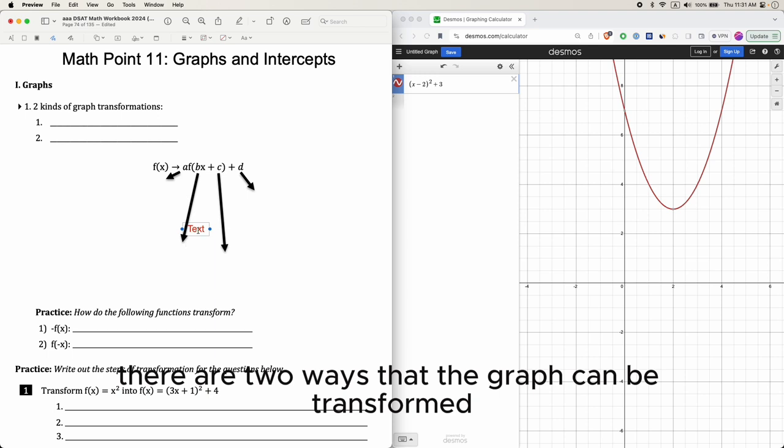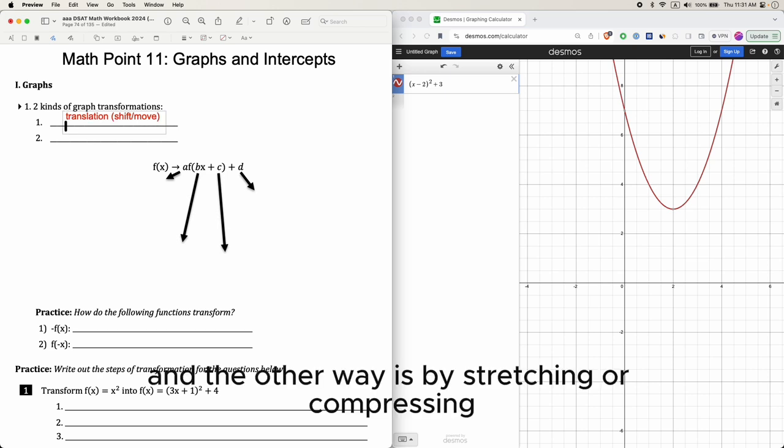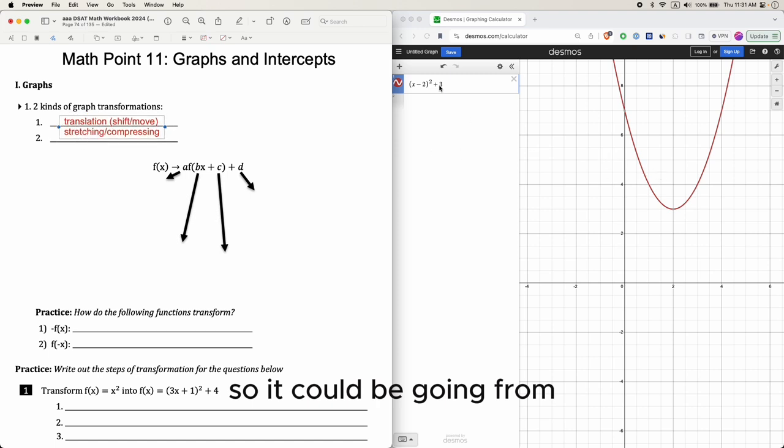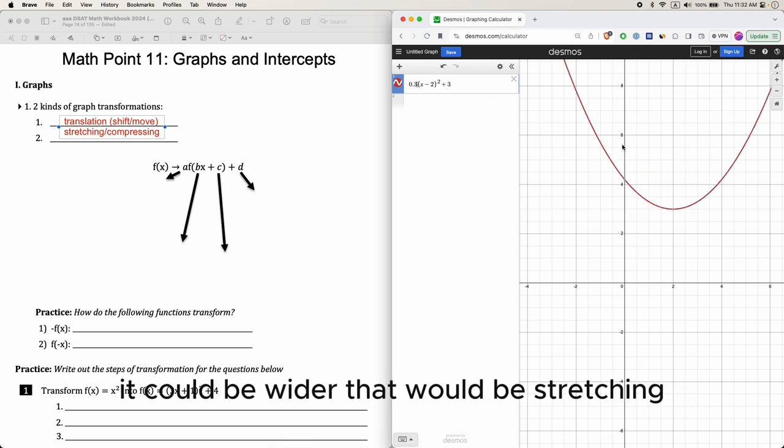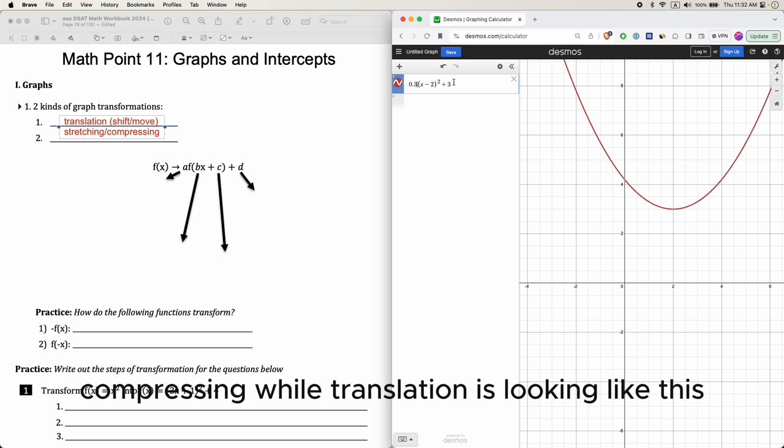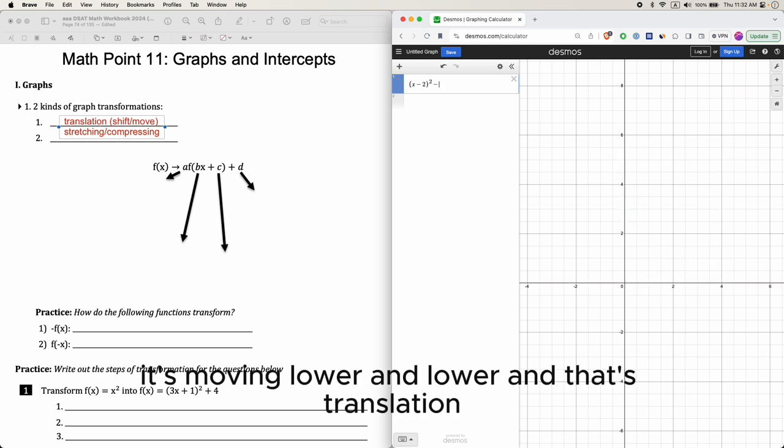There are two ways that the graphs can be transformed. One is by translation, and this is a shift or moving. And the other way is by stretching or compressing. So it could be going from, for example, from this to this, to this, to this. This would be compressing, making it thinner and thinner. Or it could be the opposite, it could be wider. That would be stretching and compressing. While translation is looking like this, and as I do that, it's moving lower and lower. That's translation.